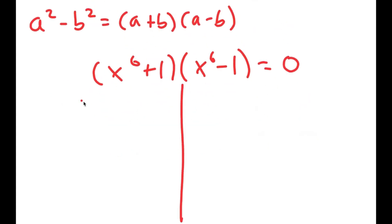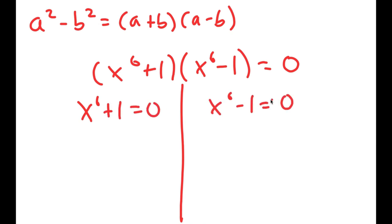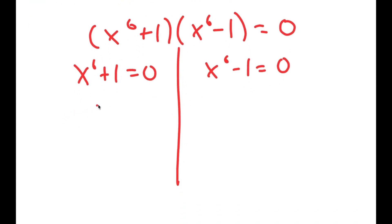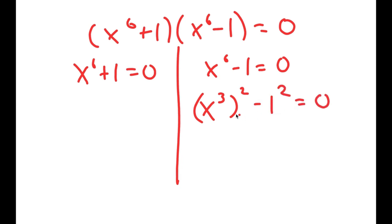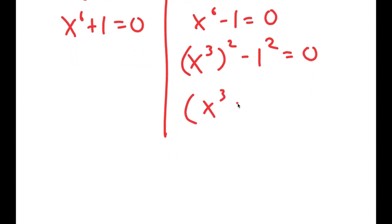So this gives me two equations: x to the power of 6 plus 1 equals 0, and x to the power of 6 minus 1 equals 0. Now I'm going to do the same thing again. I'm going to rewrite x to the power of 6 minus 1 equals 0 as x to the power of 3, squared, minus 1 squared is equal to 0. So I can use this property again and get x to the power of 3 plus 1 times x to the power of 3 minus 1 is equal to 0.